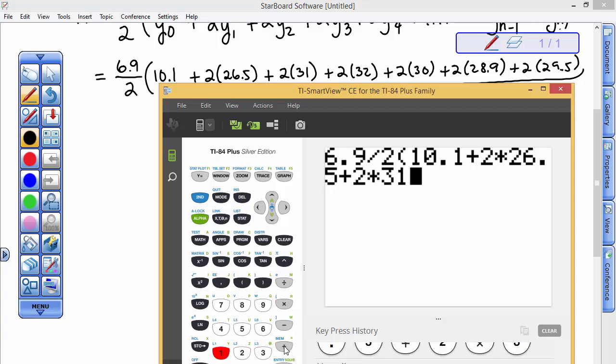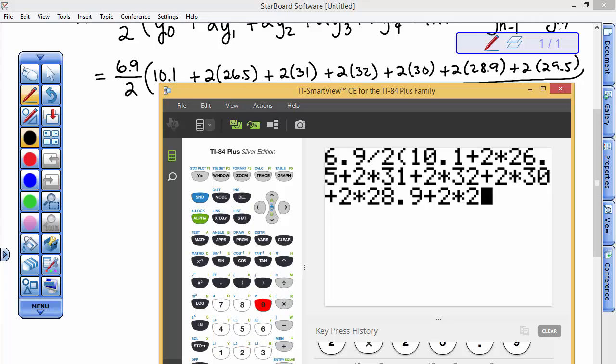Plus 2 times 30, plus 2 times 28.9, plus 2 times 29.5. And now I'm off the screen. I'm below the calculator. I'm going to keep going. Plus 2 times 25.8.